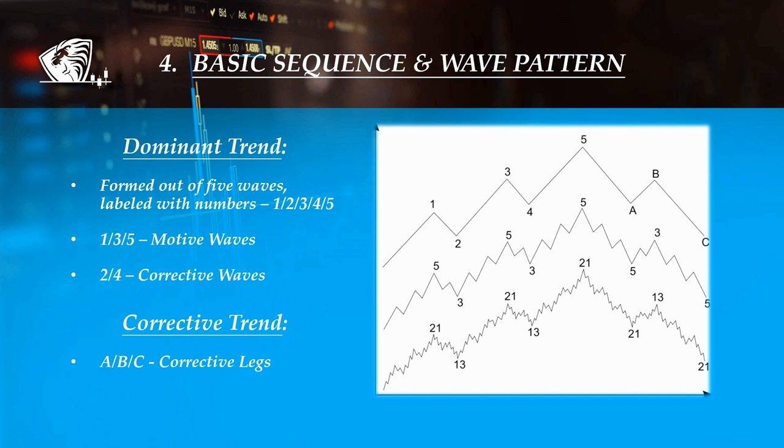Simply put, the wave principle states that the full cycle is formed out of eight swings and that the market moves within five waves in the direction of the main trend and then with three waves against it. Once the impulse phase is complete, then the trend corrective legs unfold and act as a pullback, labeled with letters A, B and C.